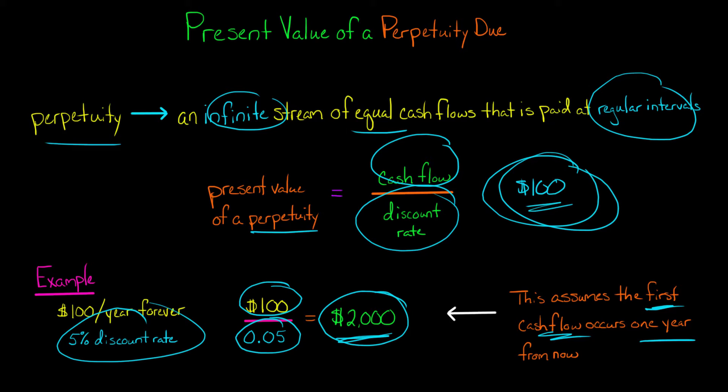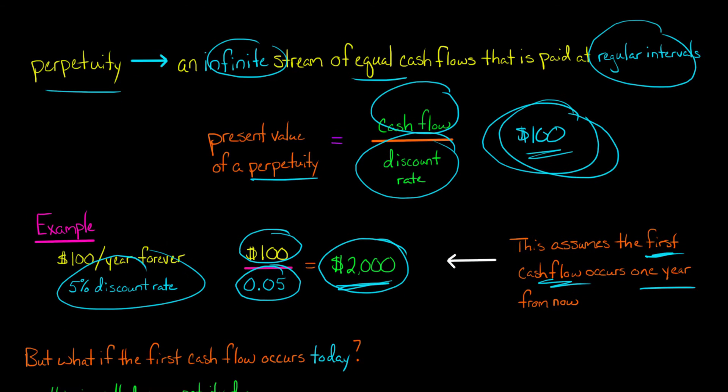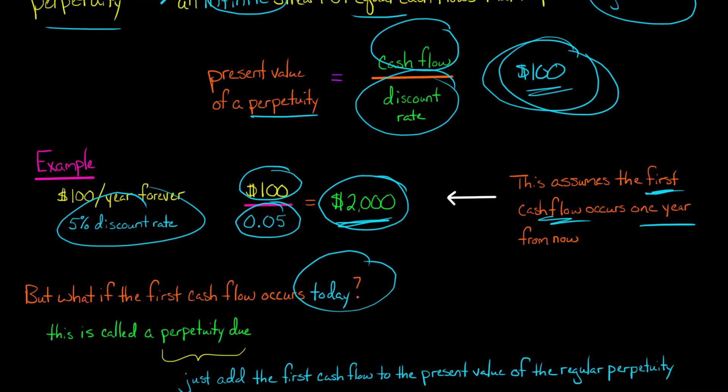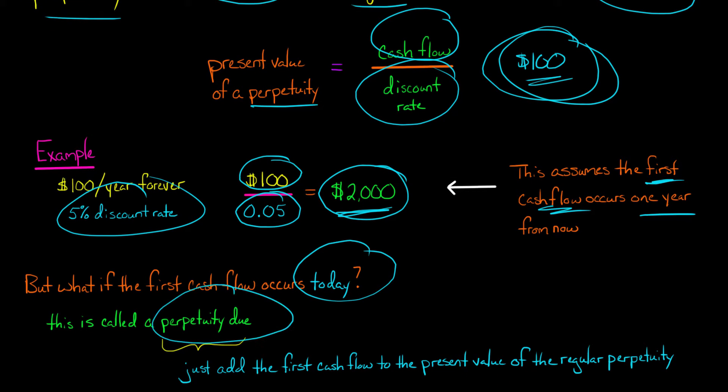But what if I told you that you got the very first cash payment of $100 today? Well, that's going to change things a little bit. We're going to need to make an adjustment. And this is called a perpetuity due. So it's different from a regular perpetuity.